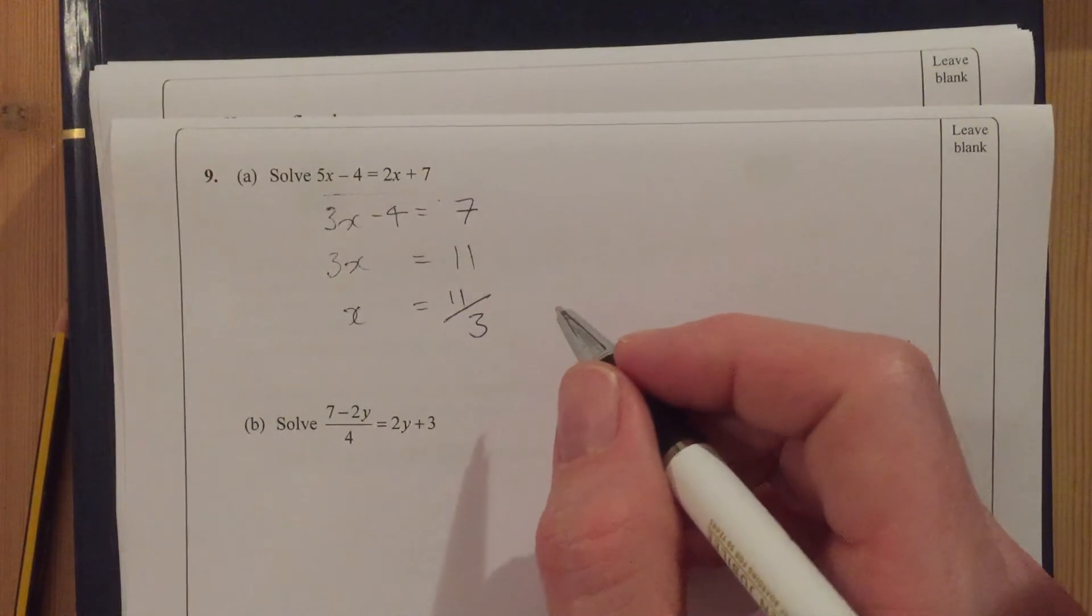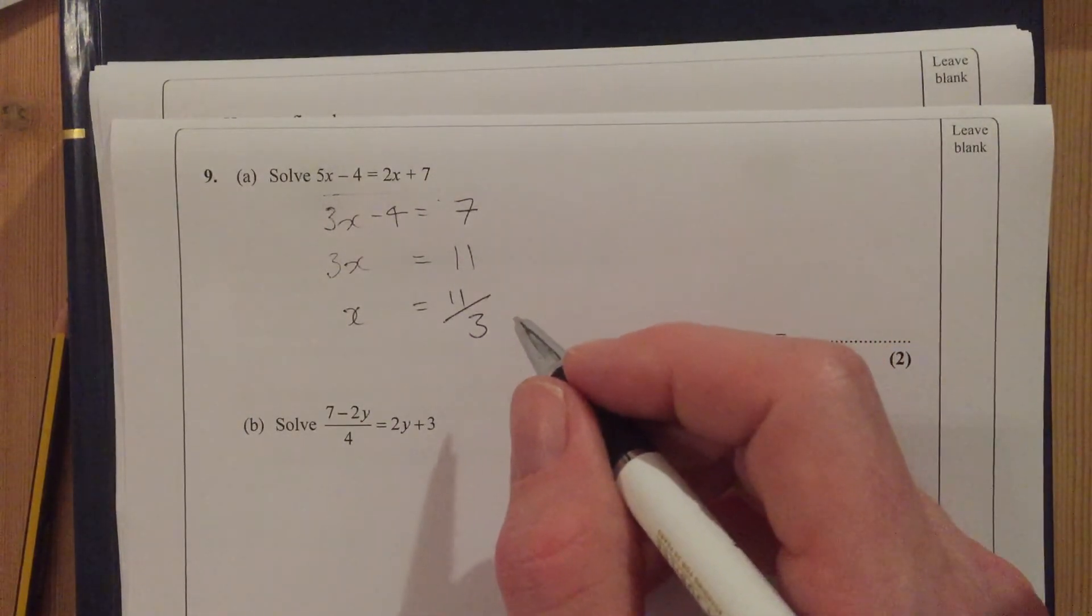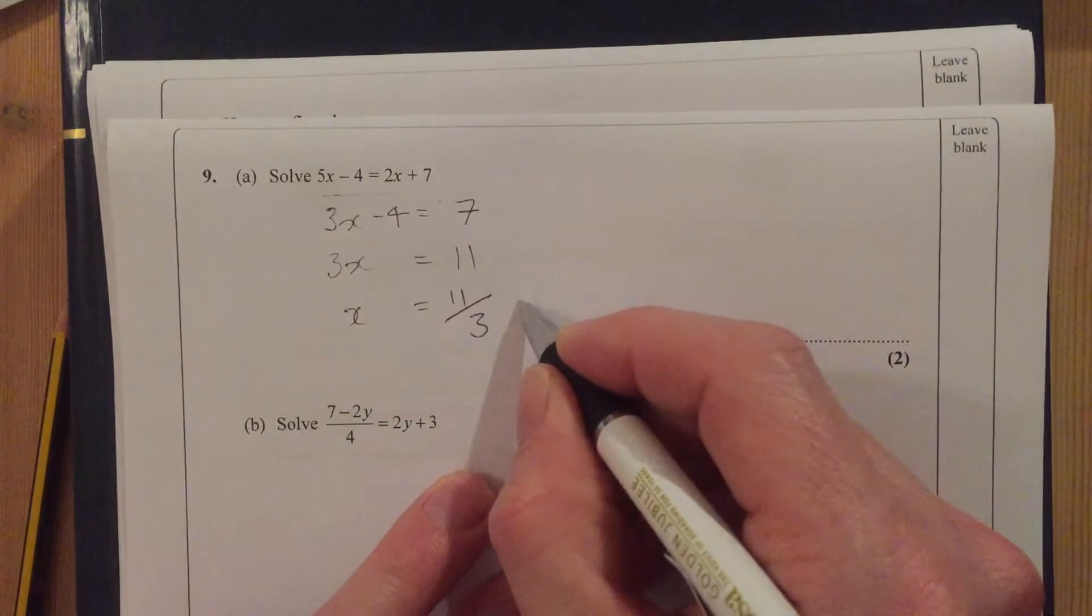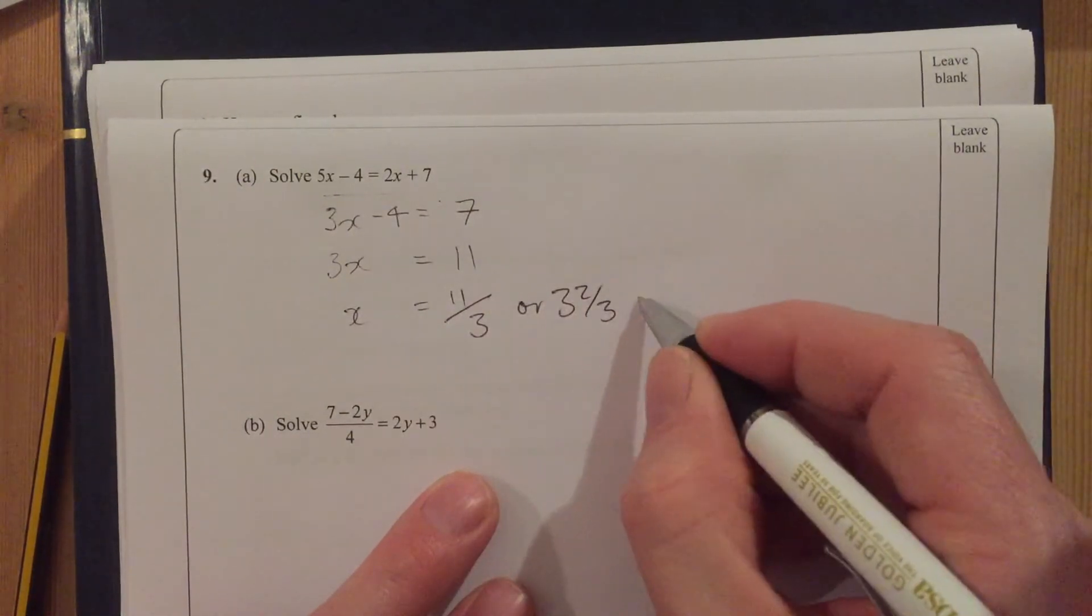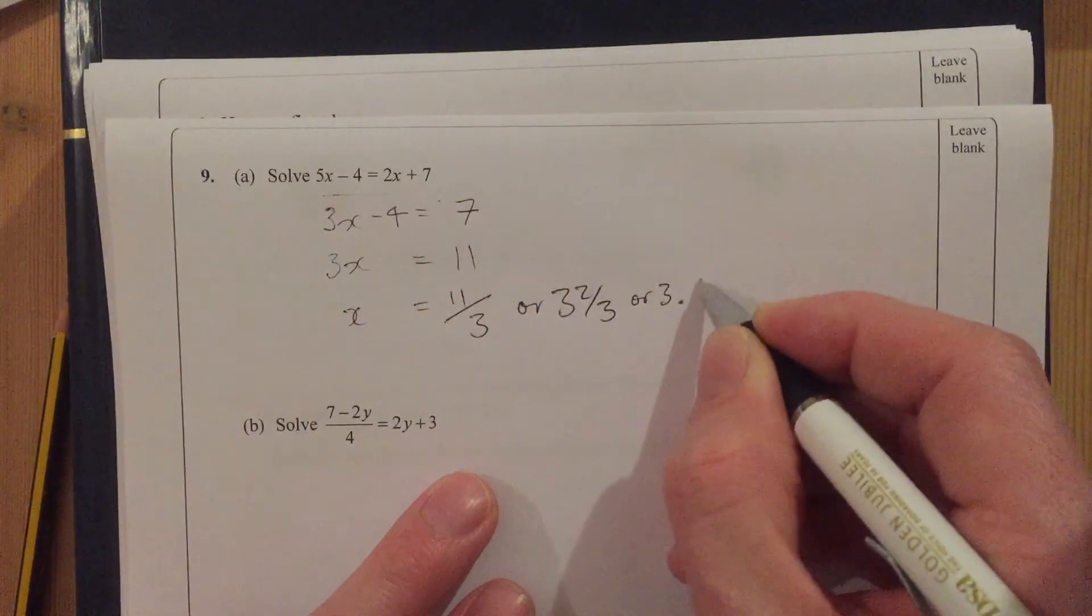11 over 3, or we can simplify it and we can call that 3 and two-thirds, or even 3.6 recurring.